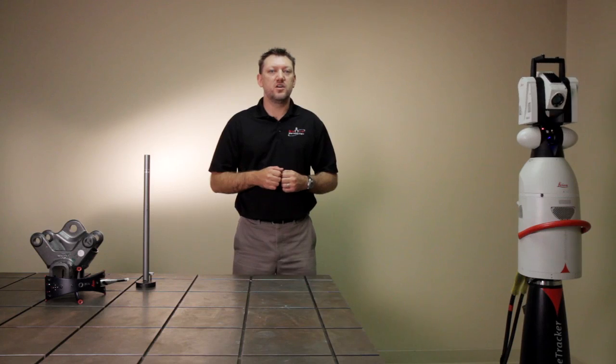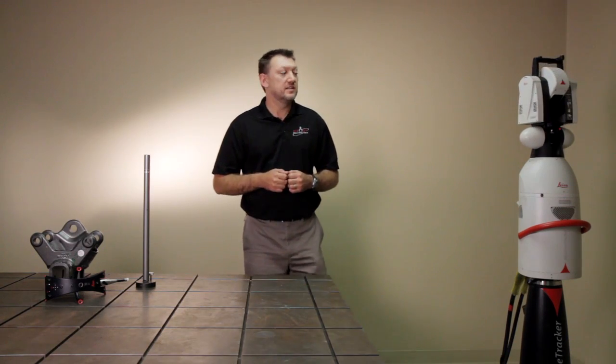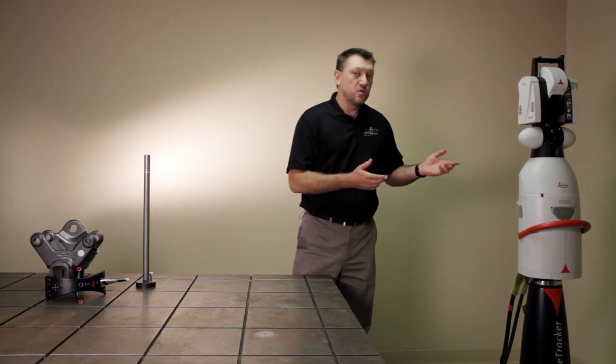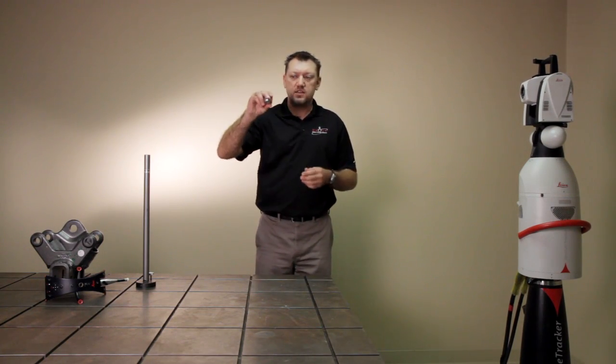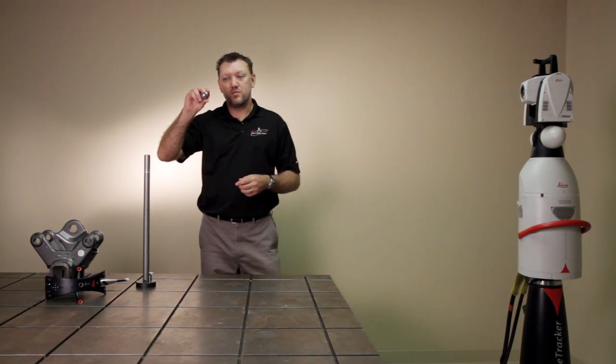Hi, I'm Michael Trudeau with Exact Metrology. Today we're going to be talking about the Leica laser tracker. Like most laser tracker systems, the unit works by using encoders to measure azimuth and elevation, and then a laser to measure the distance to a spherically mounted retroreflector.